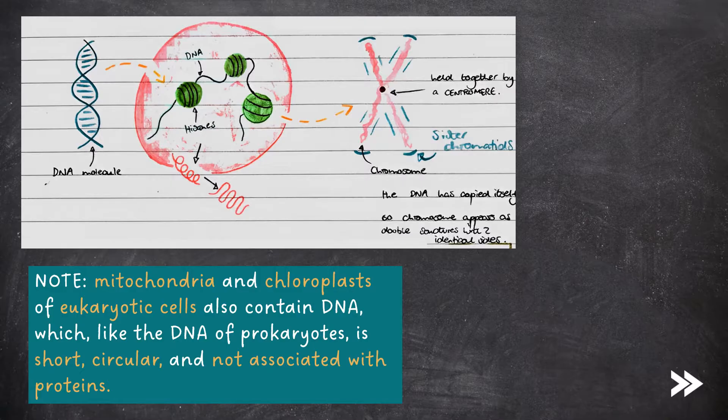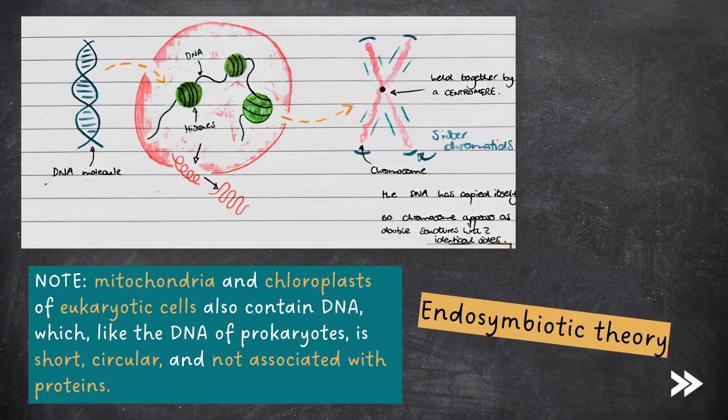This was a spark for a theory known as the endosymbiotic theory, which suggests that these organelles might once have been free-living bacteria that were, at one point in evolution, engulfed by a eukaryotic cell, and were of an advantage to the eukaryotic cell, which meant that this feature was passed on in evolution.